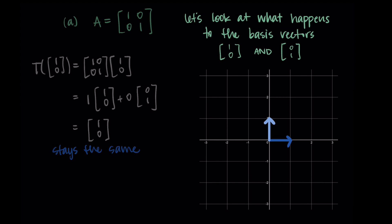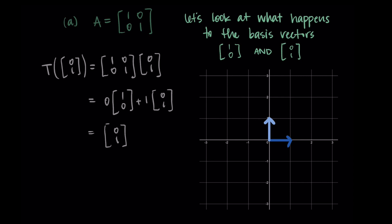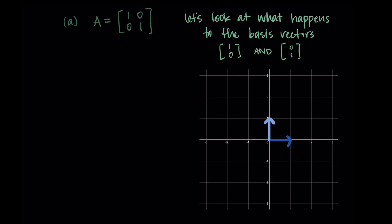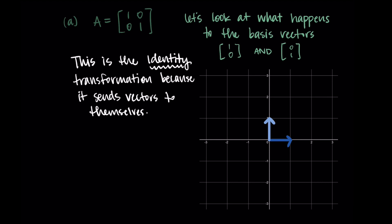We can repeat this for the second basis vector. When we input (0, 1), we do 0 of the first column plus 1 of the second column, and we just get (0, 1). So this transformation also kept that vector the same. For any vector we put in, we're going to get the same vector out. This transformation has a special name: it's called the identity transformation, because it just sends vectors to themselves — it keeps things as they are. It's an identity matrix.